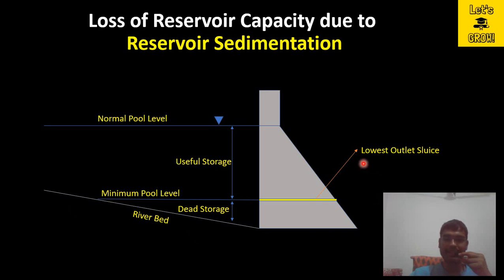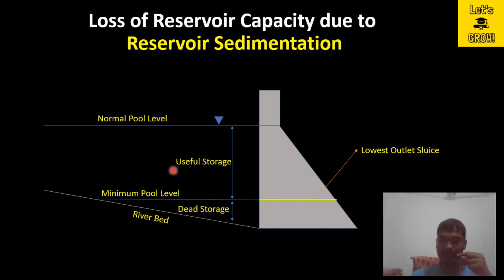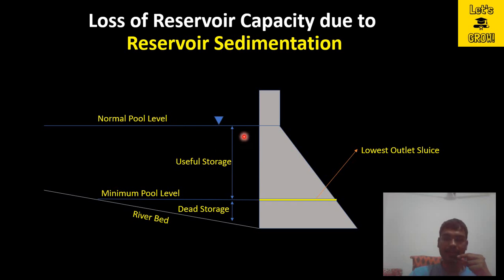This is the river bed and this is the lowest outlet sluice. Whenever river water comes into the reservoir, it contains water along with sediments — sediment means soil particles. The velocity of water in the river is sufficient to carry those sediment particles, but once this river water comes into the reservoir, the velocity becomes zero. When velocity is zero and water is stagnant, whatever sediment particles are coming into the reservoir start to settle down at the bottom.